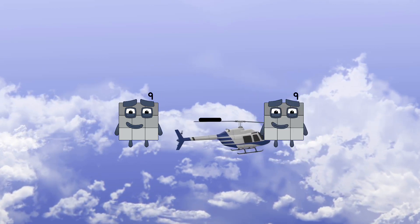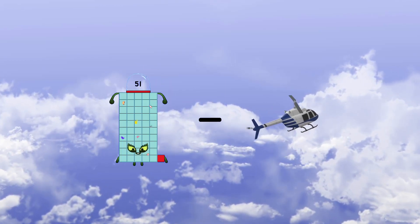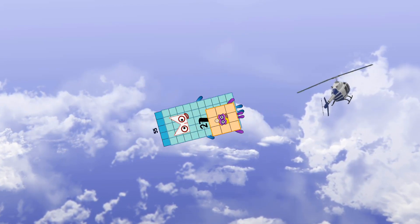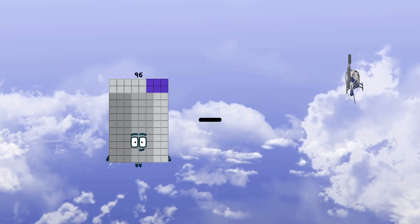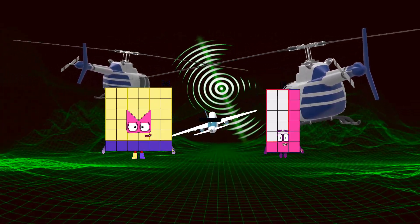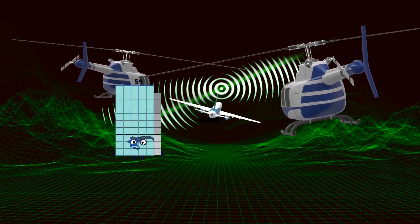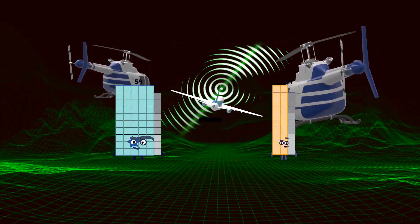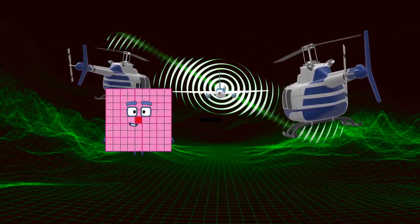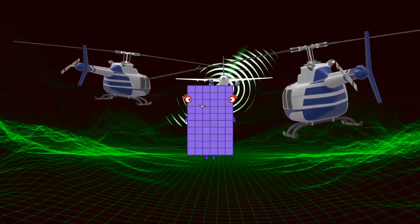9 minus 2 equals 7. 55 minus 27 equals 28. 36 minus 18 equals 18. 59 minus 29 equals 30. 81 minus 21 equals 60.